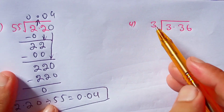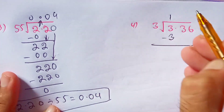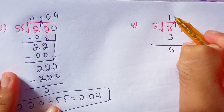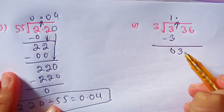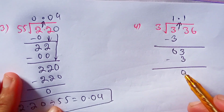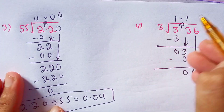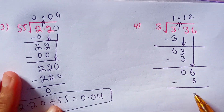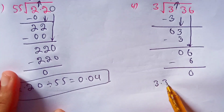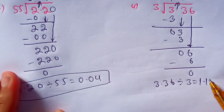3 times 1 is 3. Subtract 3 from 3, the remainder is 0. Carry the decimal point to the quotient and bring down the 3 near 0. 3 times 2 is 6. Subtract 6 from 6, the remainder is 0. Bring down the 6. 3 times 2 is 6. So we can say that 3.36 divided by 3 is equal to 1.12.